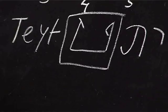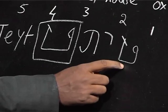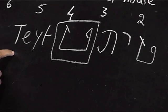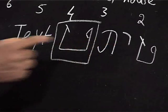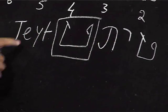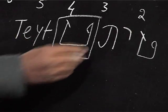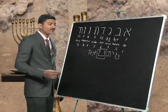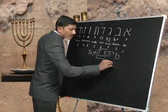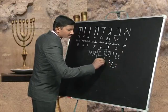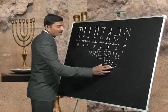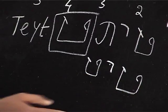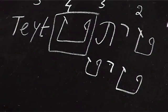Tait is written as follows: Tait, Yod, and Tav — so the letters spell T-Y-T. In another sense, some people also write it as Tait, Yod, and Tait — again T-Y-T. So Tait can be spelled in these two ways in Hebrew.